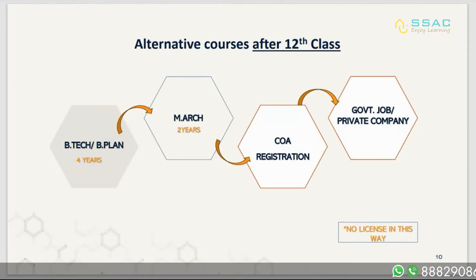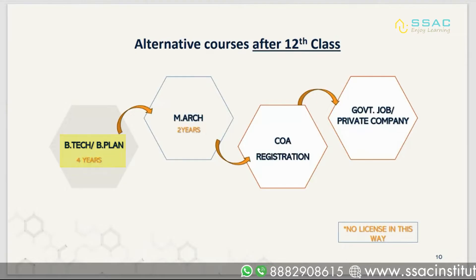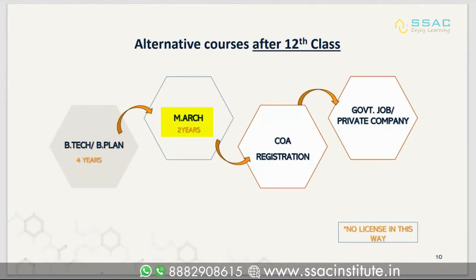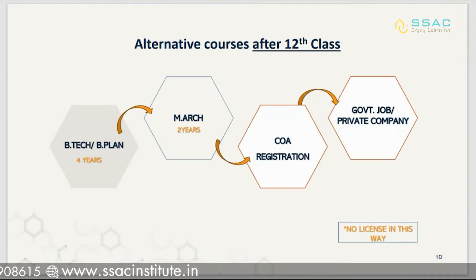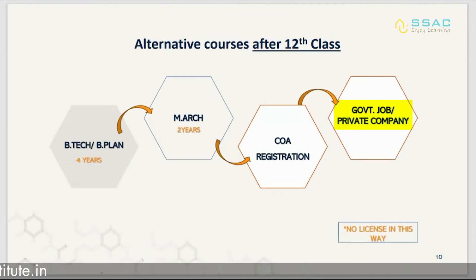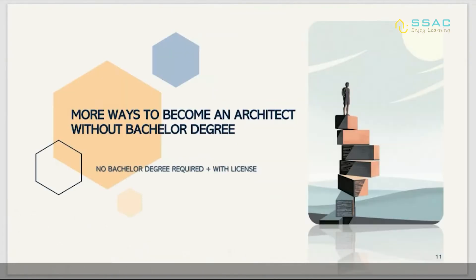There are also alternative courses to become an architect after 12th class. You can do B.Tech or B.Plan, which is four years, after which you can continue with an M.Arch degree — Masters in Architecture — of two years, and complete your COA registration. However, in this case you won't get a license to work as an architect, but you will be able to apply for government jobs and private companies.